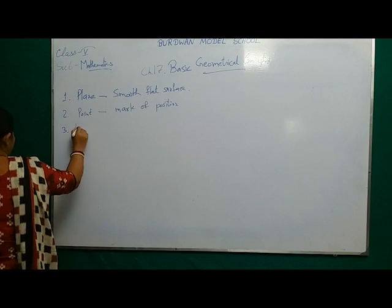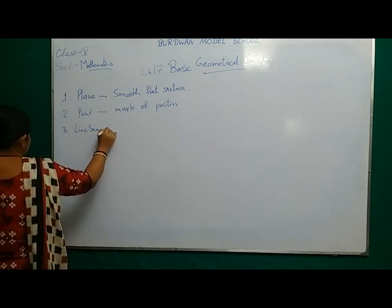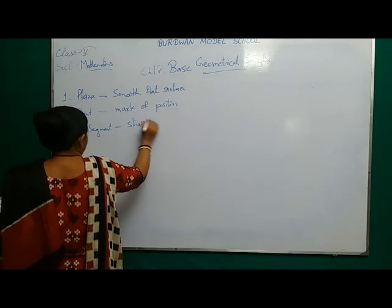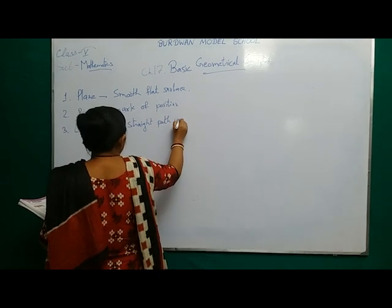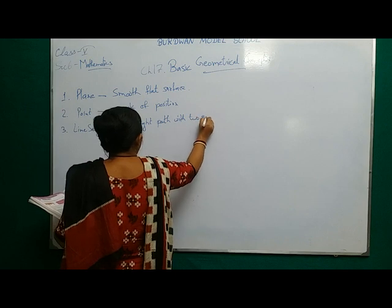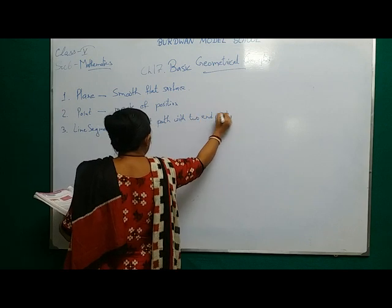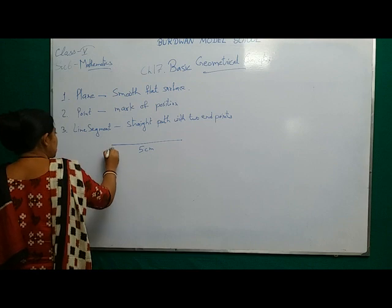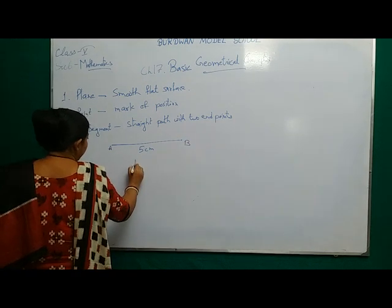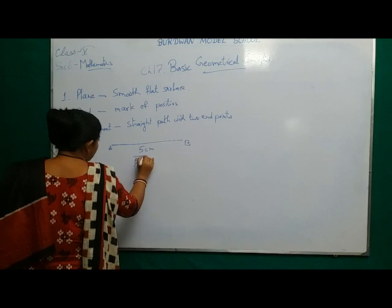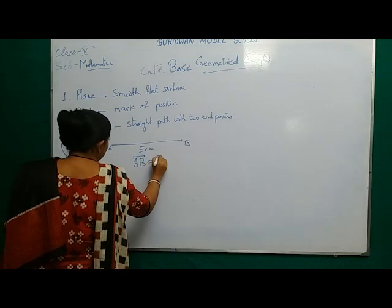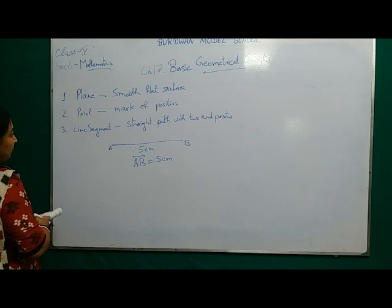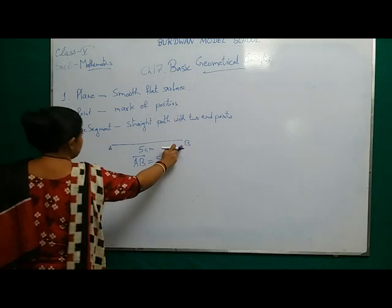Third one is line segment. A line segment is a straight path with two endpoints. Suppose I am drawing a line segment of 5 centimeters and I am naming it A and B. How will I denote the line segment? AB equals 5 centimeters. Line segment is a straight path with two endpoints — one is the starting point and one is the ending point.